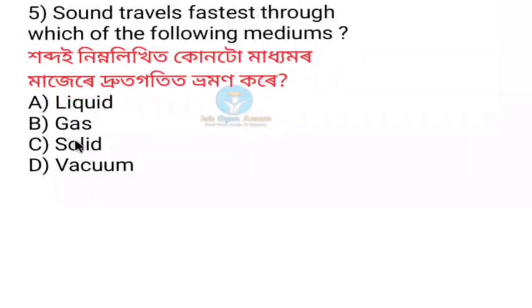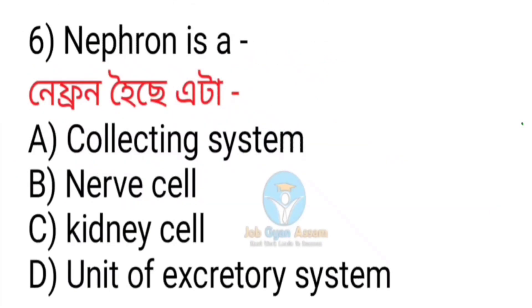Sound travels fastest through which of the following medium? Next question: What is a nephron? It is a collecting system — nerve cell, kidney cell. Option D is correct: nephron is the unit of the excretory system.